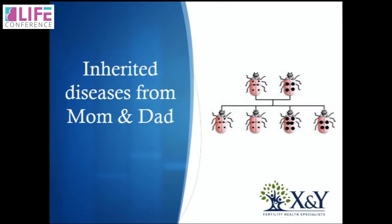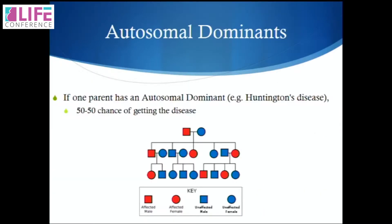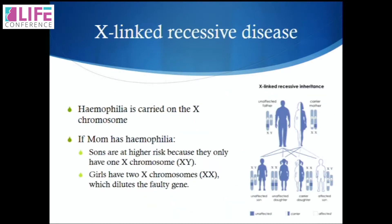What about inherited diseases from mum and dad? We have autosomal dominant conditions — if one parent has an autosomal dominant such as Huntington's, then you have a 50-50 chance of getting the disease, with 50% of the next generation carrying the affected gene. For X-linked recessive diseases such as haemophilia, which is carried on the X chromosome: if mum has haemophilia, sons are at higher risk because they only have one X chromosome, while daughters dilute it and have less chance of getting haemophilia.